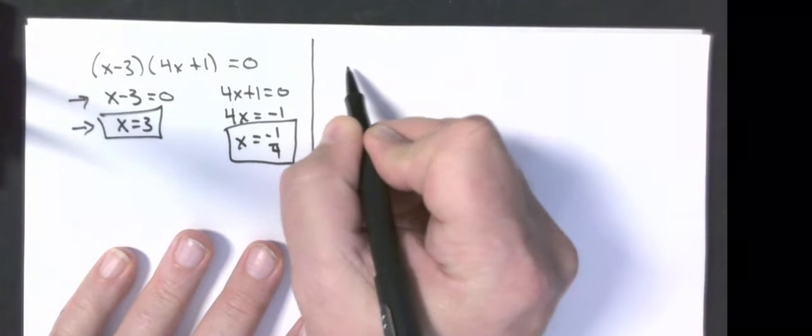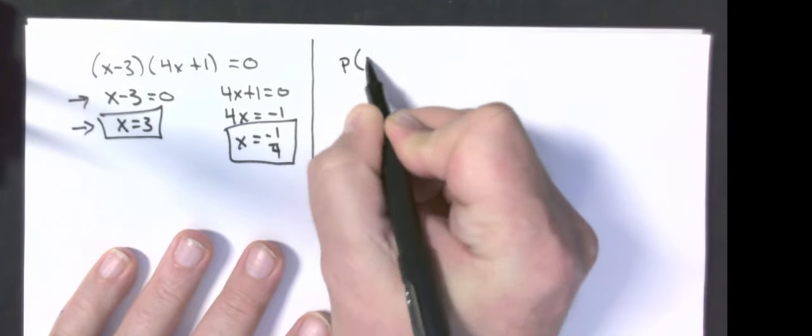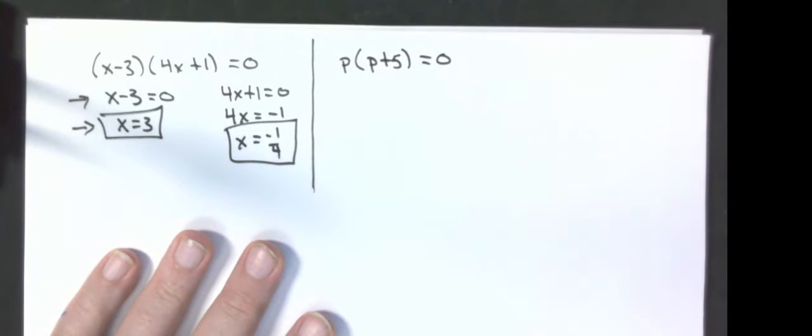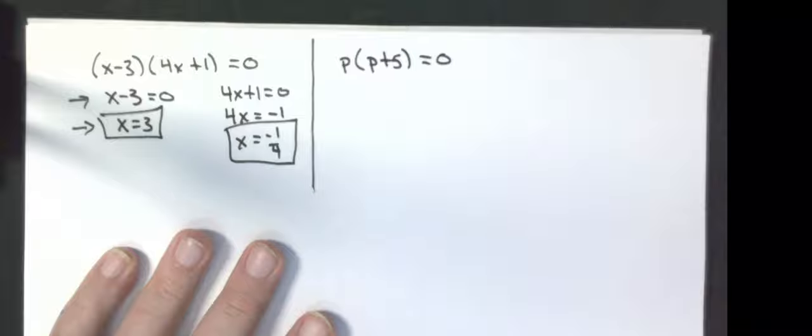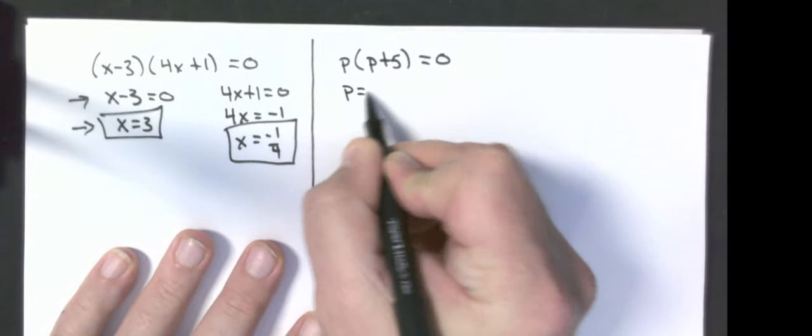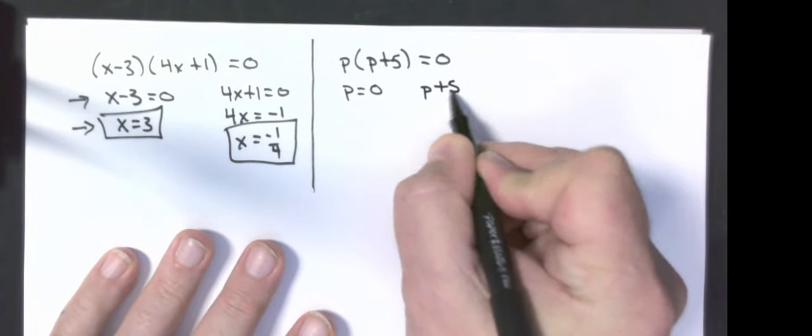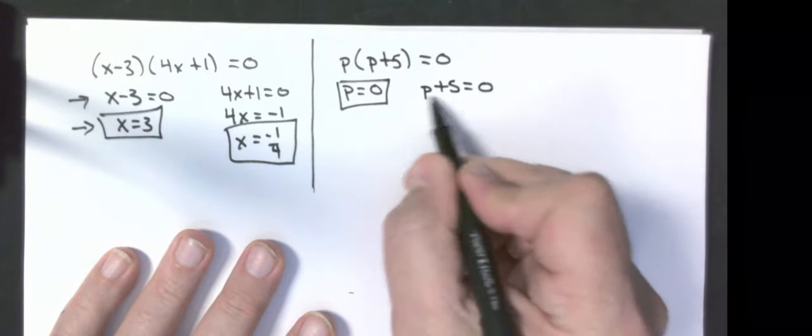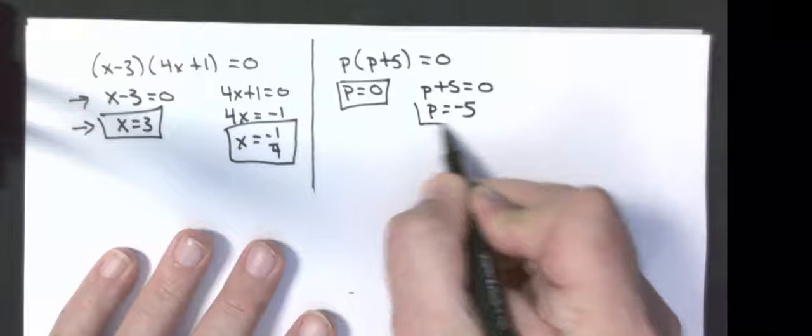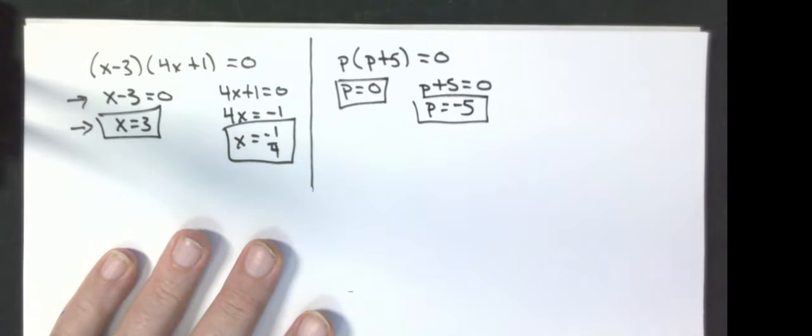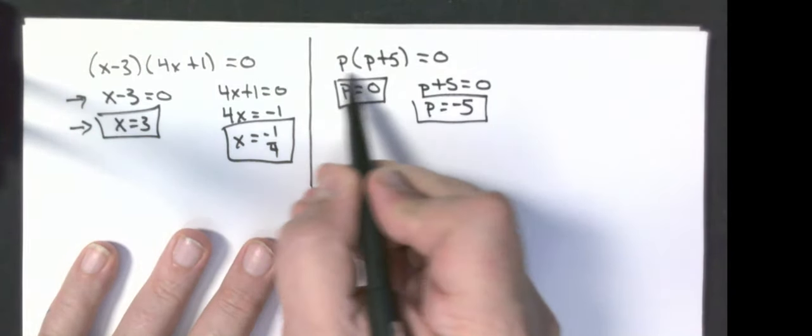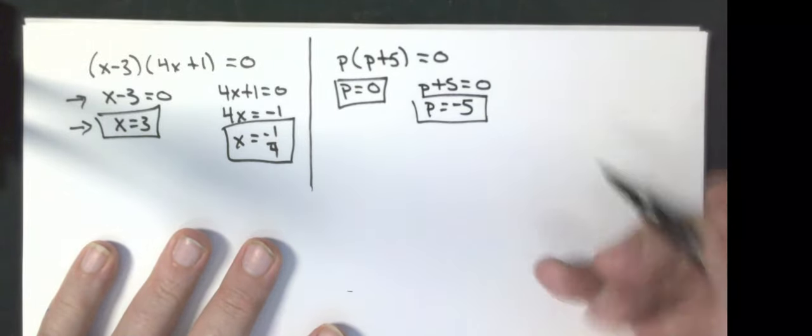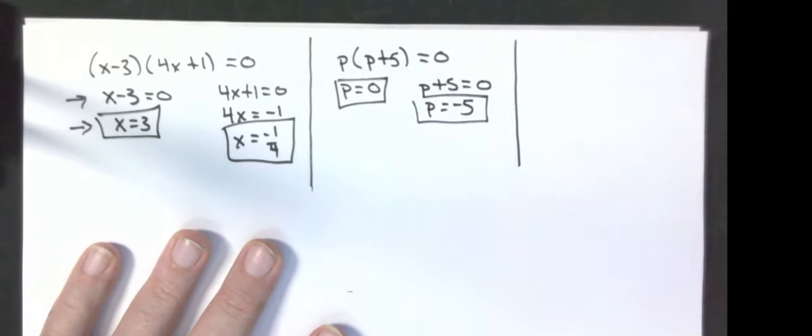I'm going to do a weird one here: p times p plus 5 equals 0. I still have a multiplication problem whose answer is zero. Let's set each part equal to zero. Well, I've already got that answer: p equals 0. Then subtract five, and I get p equals negative five. This is a factor, it's just that it's got a plus zero there.